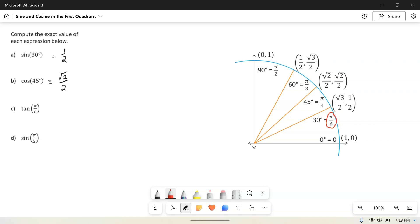If you remember for tangent, tangent is y over x. So tangent of pi over 6 would be 1 half divided by root 3 over 2, and the nice thing here is the 2's are all going to cancel, and so we get that tangent of pi over 6 is equal to 1 over square root of 3.